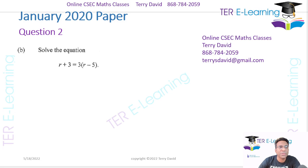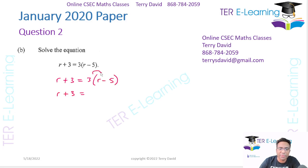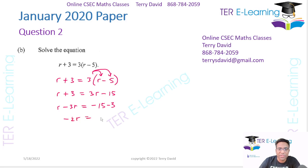Next, we want to solve the equation R plus 3 equals 3 open bracket R minus 5. Expanding: R plus 3 equals 3R minus 15. Carrying all R's to one side: R minus 3R equals minus 15 minus 3, so minus 2R equals minus 18. Therefore R equals minus 18 over minus 2, which gives R equals positive 9.